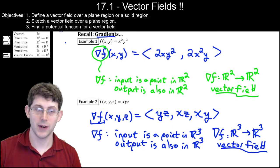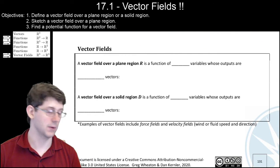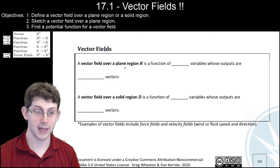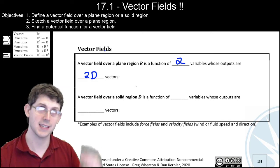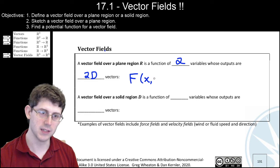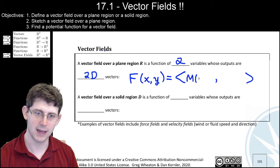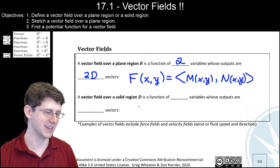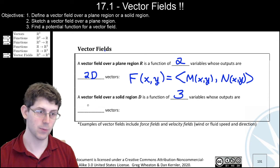That's to convince you that even though vector fields are complicated, you've seen them before and they're not particularly scary. So what is a vector field — we want to write down a definition. Not all vector fields come from the gradient. A vector field over a plane region is a function of two variables whose outputs are two-dimensional vectors; since it's a complicated object we use a capital letter. A vector field over a solid region is a function of three variables whose outputs are three-dimensional vectors.